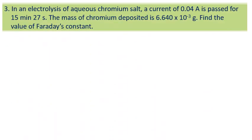Question 3 is the calculation to find the value of Faraday's constant. The question is: In an electrolysis of aqueous chromium salt, a current of 0.04 ampere is passed for 15 minutes 27 seconds. The mass of chromium deposited is 6.640 times 10 to the power of negative 3 gram. Find the value of Faraday's constant.